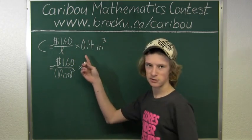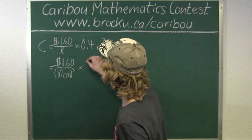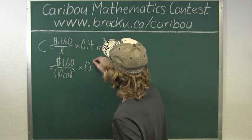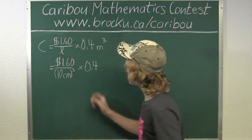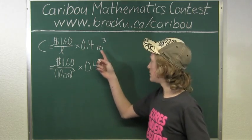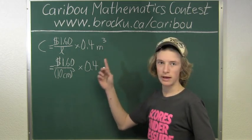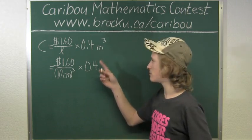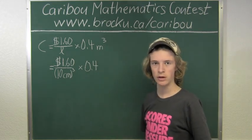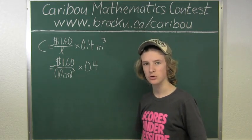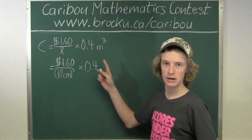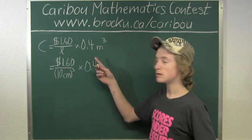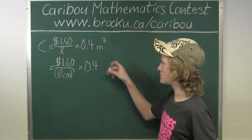And it would still be 0.4. Instead of writing meters cubed, we know that one meter is 100 centimeters. So the volume would be 100 centimeters times 100 times 100, which can also be written as (10 × 10 cm)³.